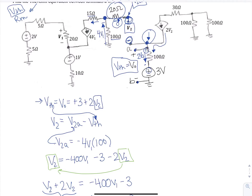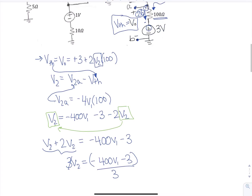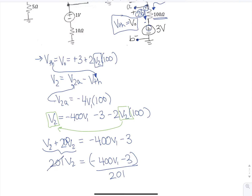I just noticed I did make an error. This was the current and this is the resistor, so it's times 100 — making this 200, not 100. So this should be 200, giving 201 V2, and dividing by 201.